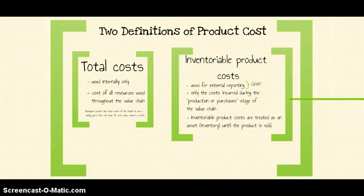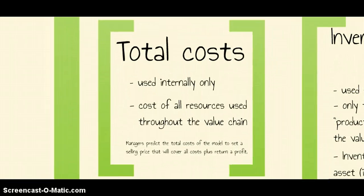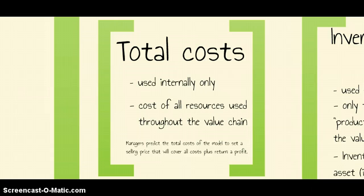Let's take a look at some more managerial accounting terminology. Most companies use two definitions of product cost. First, we've got total cost, which is the cost of all the resources that we use throughout our value chain. The sum of all the direct costs and indirect costs is your total cost. Companies use this only for internal purposes — basically to figure out a selling price. They want to make sure that they cover all the costs of bringing the product to the customer, plus they want a profit. Total cost is only used internally.